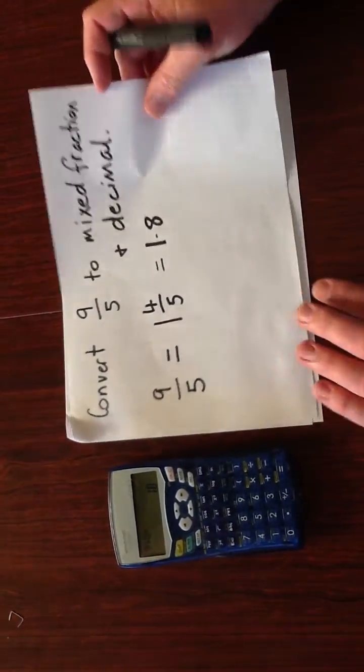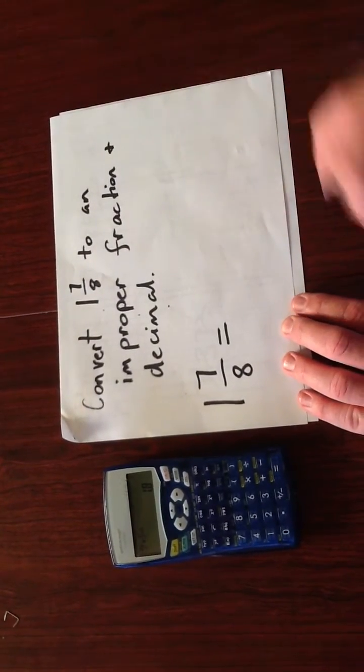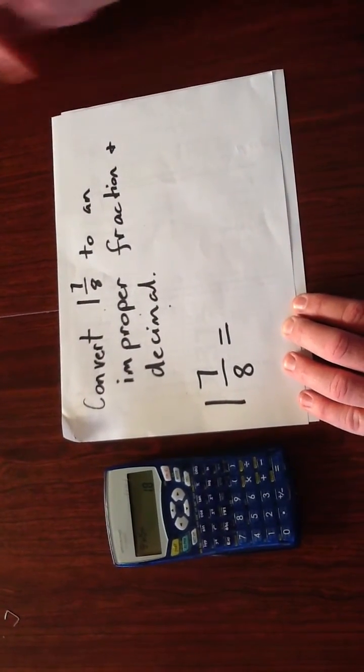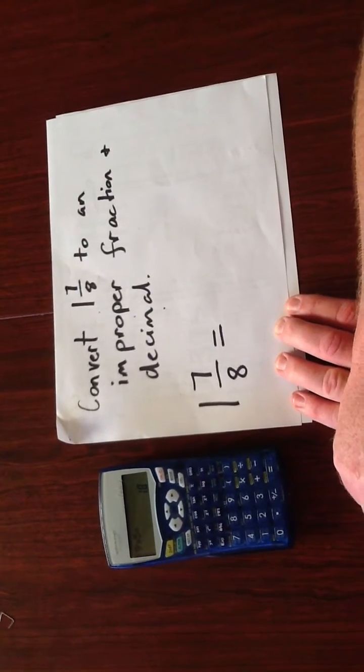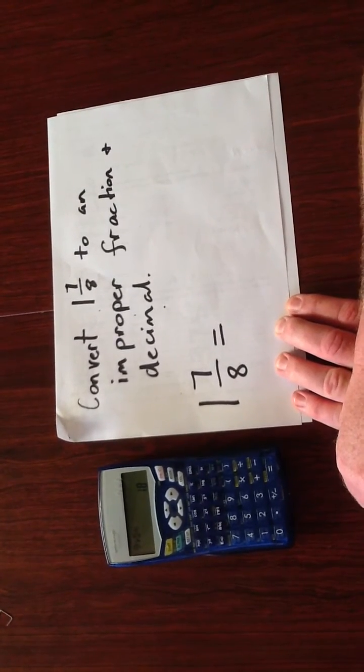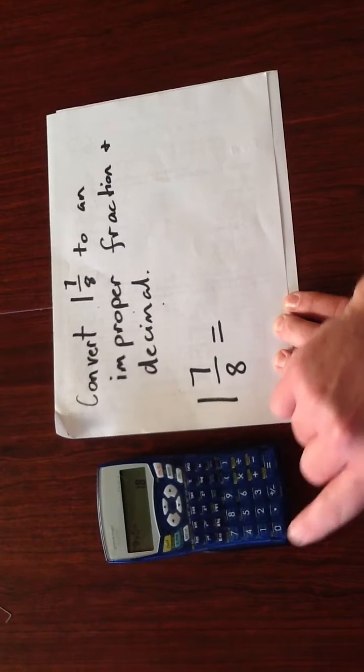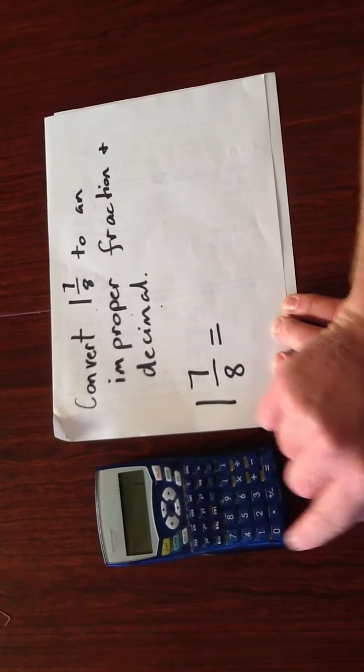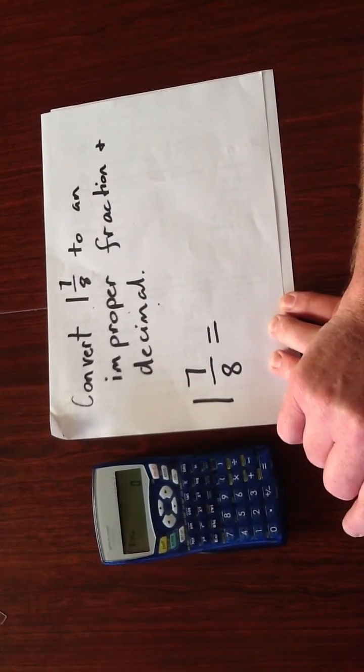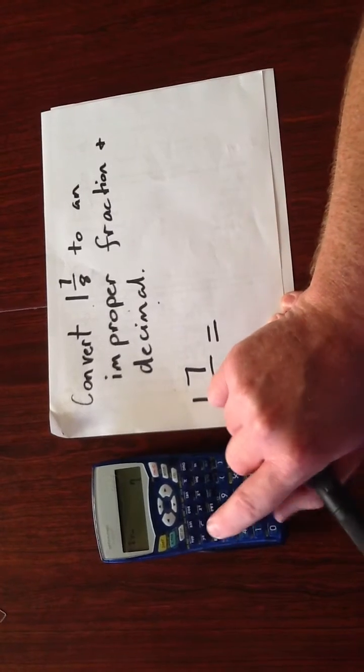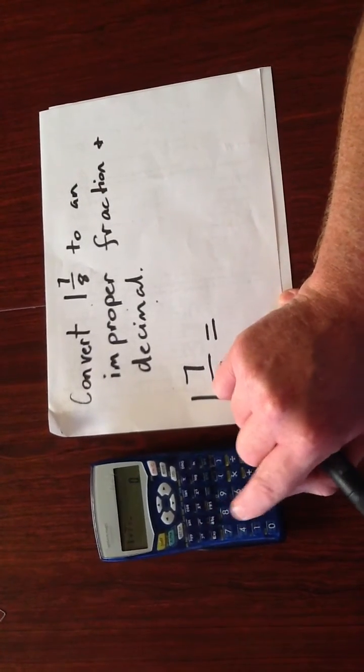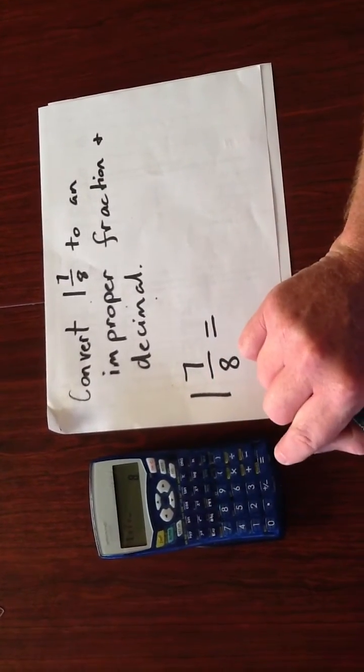OK, another example. Let's convert 1 and 7 eighths to an improper fraction and a decimal. So to enter 1 and 7 eighths, we press 1, the ABC button, 7, again the fraction button and 8 and press equals.